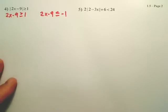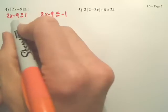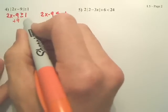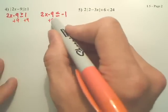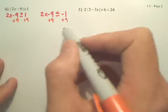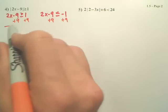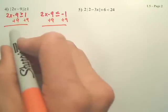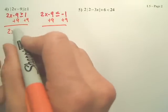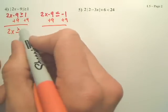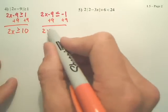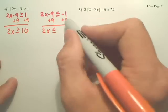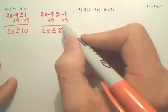Okay, and now we solve. So we're going to add 9 to both sides. Add 9 to both sides for both of these. This one's going to be 2x is greater than or equal to 1 plus 9 is 10. And 2x is less than or equal to 8.